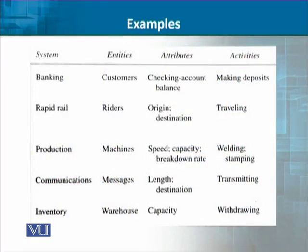Let's take some examples. If our interest is a banking system, the most important thing is the clients — the customers. So we can say our system is banking and our entities are customers. The attributes will be their account balance — how much money they keep in their checking account. The event will be a deposit, and the activity is the duration of making that deposit — the time period involved.